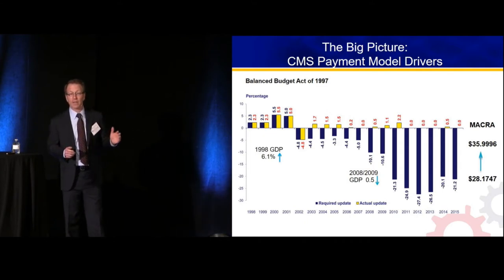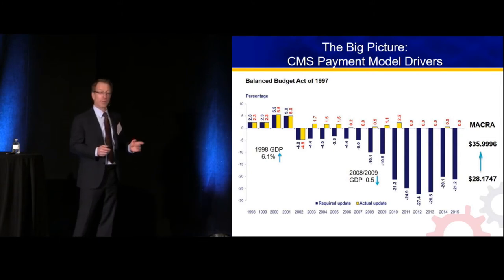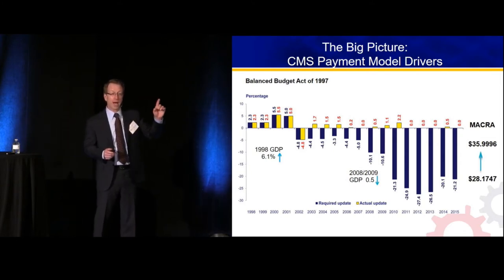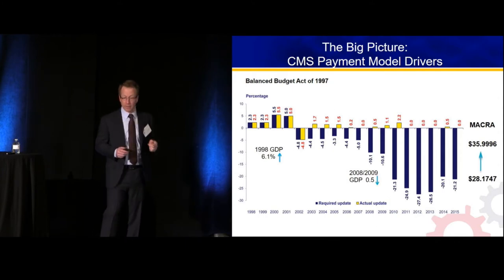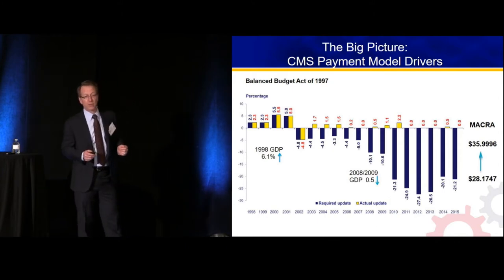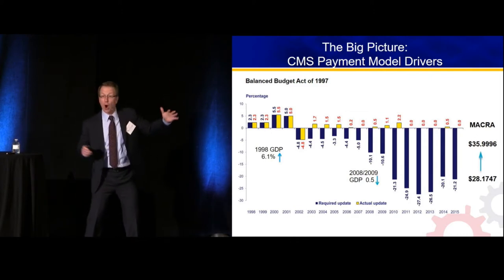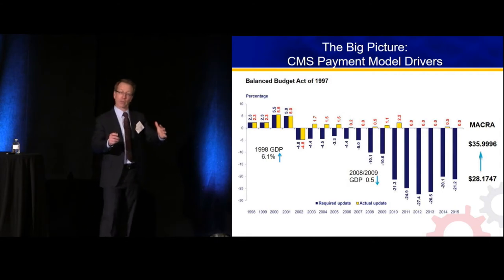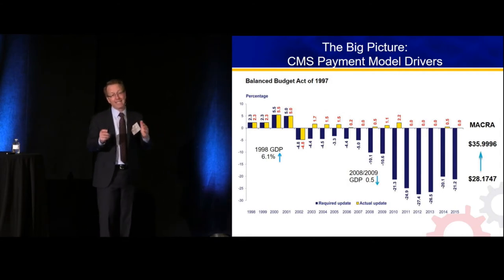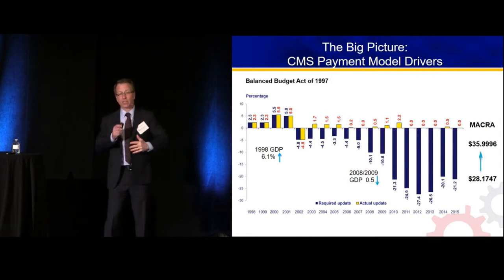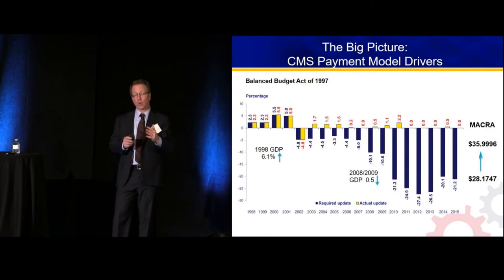And all of a sudden the bottom falls out — 2007, 2008 — gross domestic product printed a negative number for the first time in 50 years, negative 0.5%. We went from a high in 1999 of a little over 6%, and our economy actually contracted during the Great Recession.